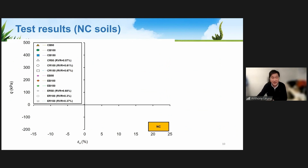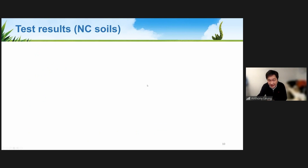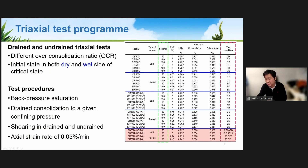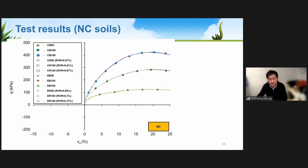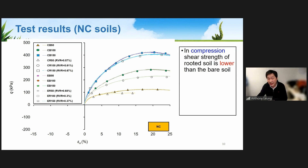Here are typical results from normally consolidated soil. This shows stress-strain curves — deviatoric stress versus deviatoric strain — for bare soil and rooted soil under compression. Quite surprisingly, the shear strength is actually reduced by the roots under compression. One reason is that as roots grow in the soil, interfaces between soil and roots are introduced, and the interface friction between root and soil is much lower than soil-to-soil interaction. This explains why shear strength of rooted soil reduces under the compression path.